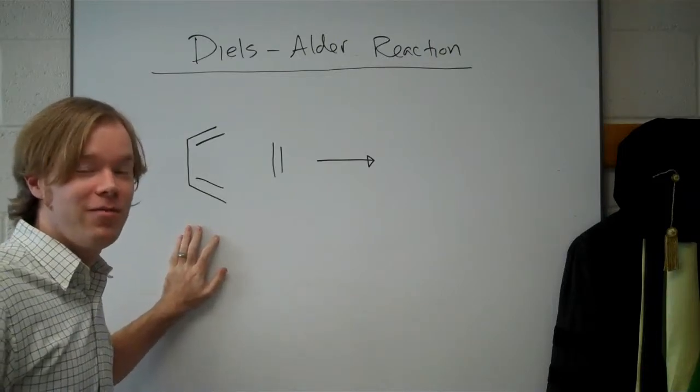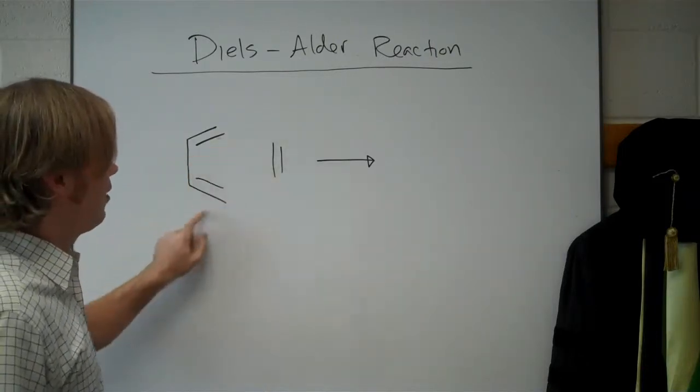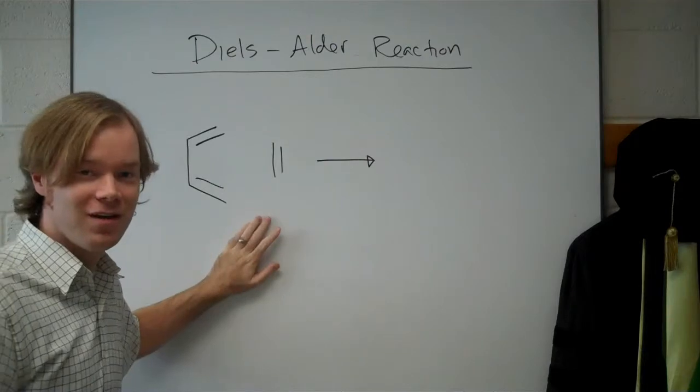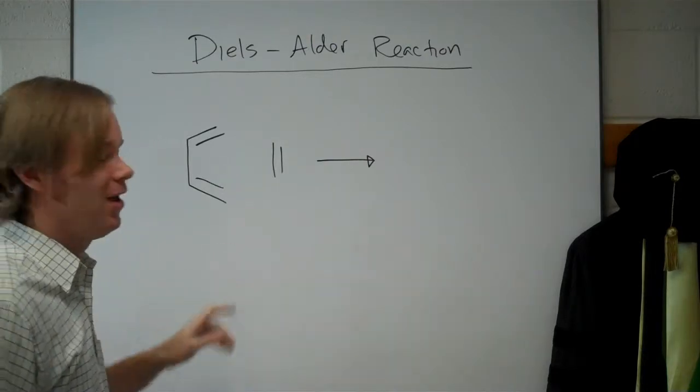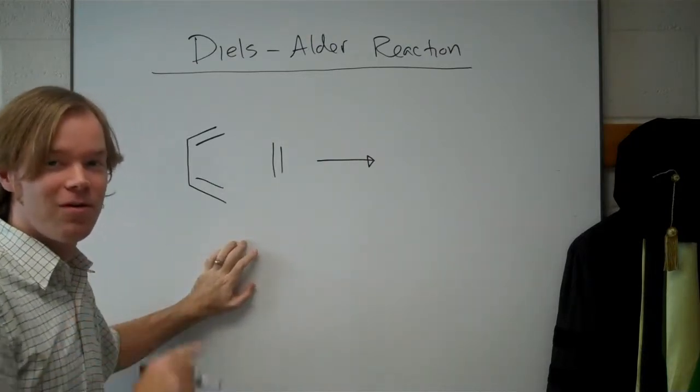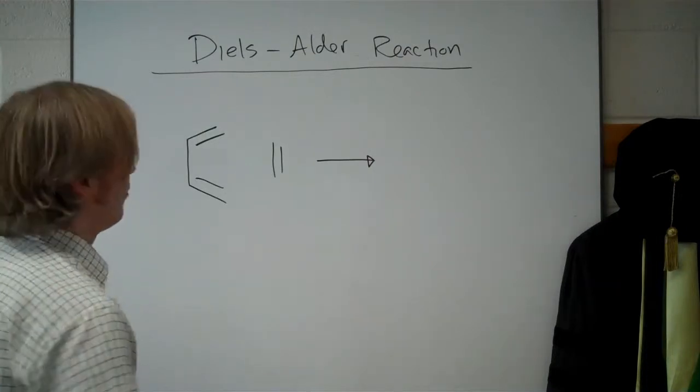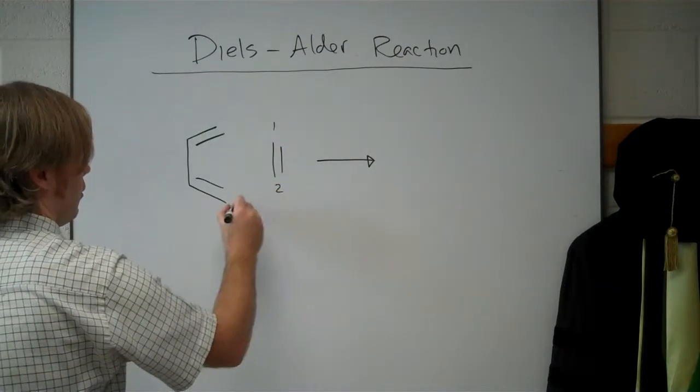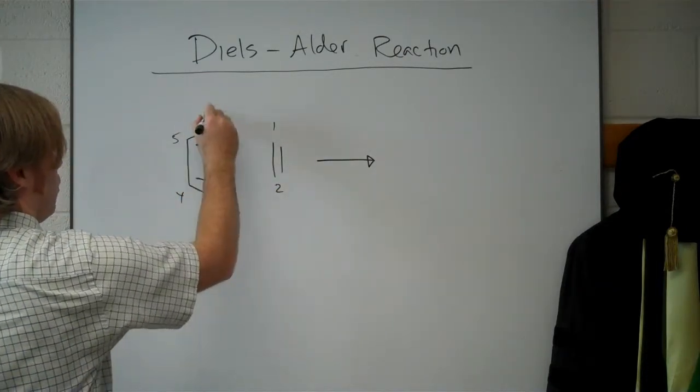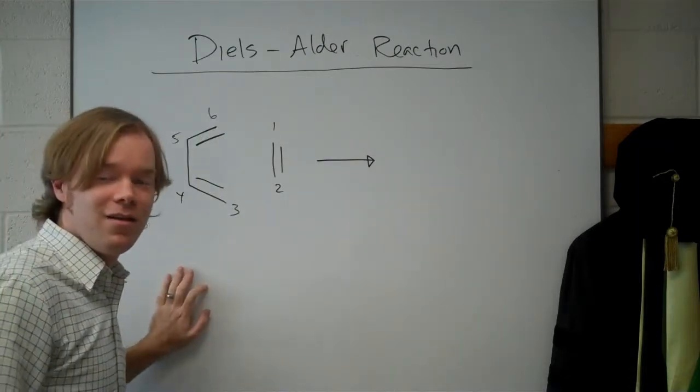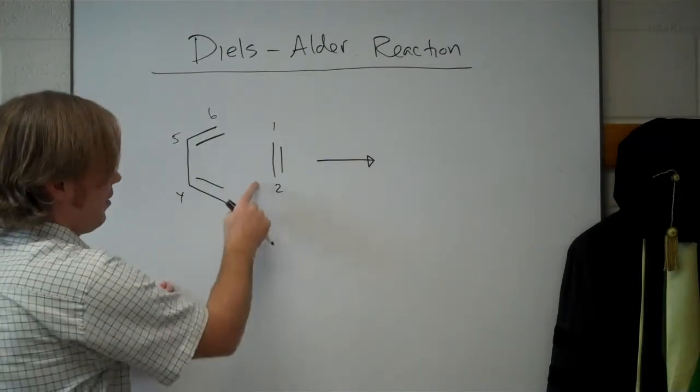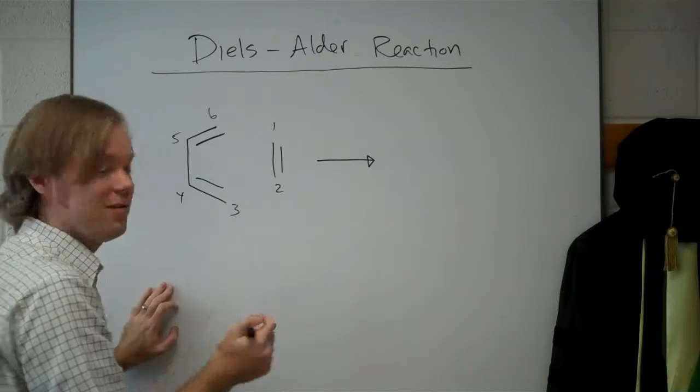What I like to do for the Diels-Alder reaction is make sure it's set up like this. It looks like an unconnected benzene ring. Then I number all six carbons that take part in the ring, and the arrows for the mechanism connect these two open pieces.